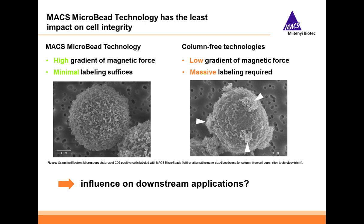For functional assays, you want the cells as viable and as functional as possible. As already established, MACS microbead technology provides minimal labeling of the cells due to the column's high magnetic gradient. Here on the left, you can see a cell isolated using MACS microbead technology, and on the right, a cell isolated using column-free technology — where there's no high gradient of magnetic force, resulting in massive labeling of the cells. The question remains: how do these beads and this massive labeling influence the downstream applications you're going to want to perform?